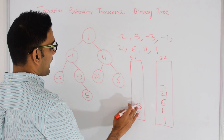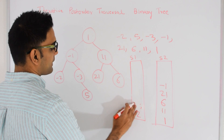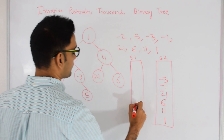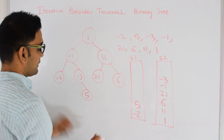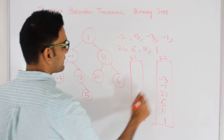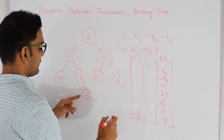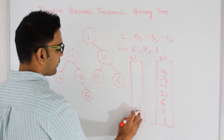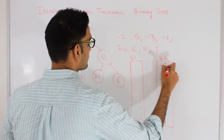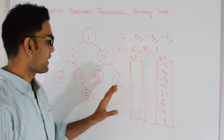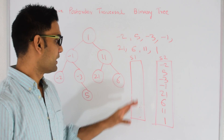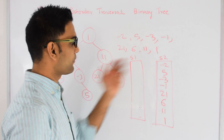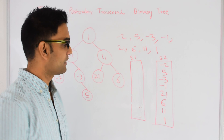Now we pop from Stack 1 — so -3 is popped out. -3 doesn't have a left but it does have a right, so 5 goes into the stack. Now we pop 5 out from Stack 1 and push that into Stack 2. 5 doesn't have left or right. We pop -2 out of Stack 1, put that into Stack 2, and -2 doesn't have left or right. So finally Stack 1 is empty.